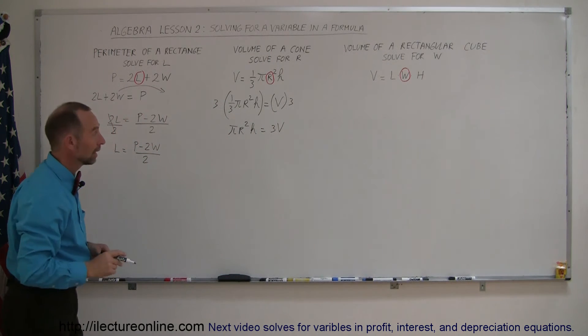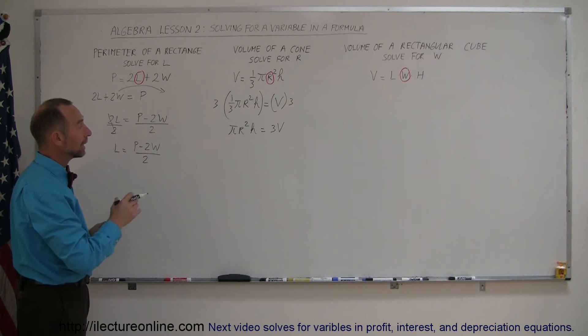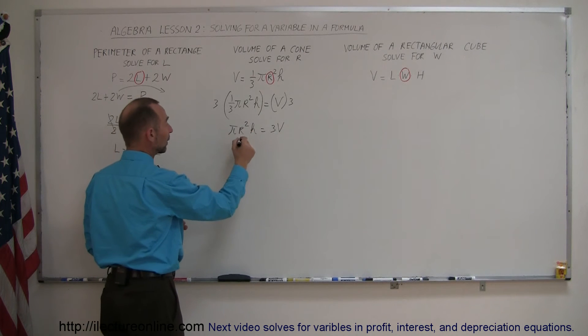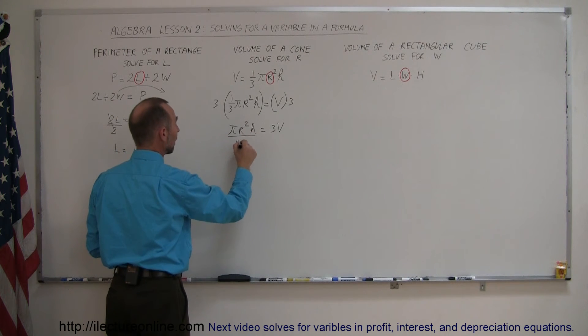Now, the next step is we want to get rid of the pi and the h on the left side, meaning we're going to divide the left side by pi and h. There's no addition on the left side, simply multiplication, so divide both sides by pi h.